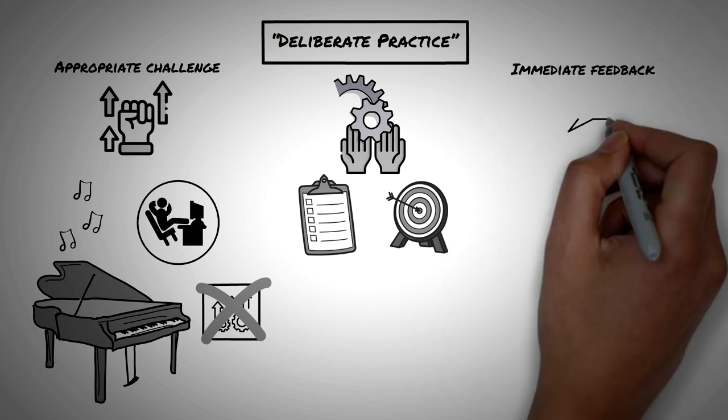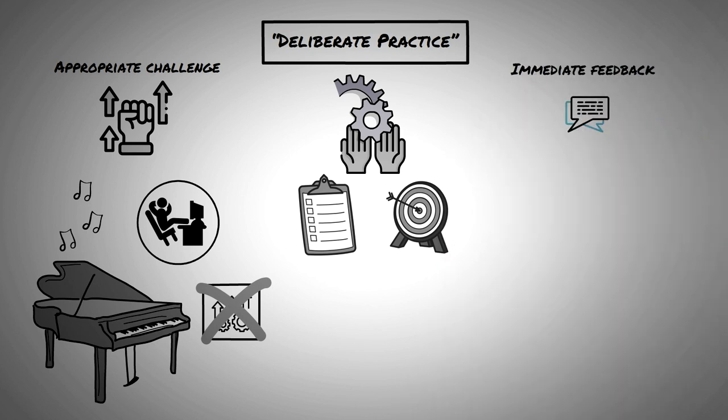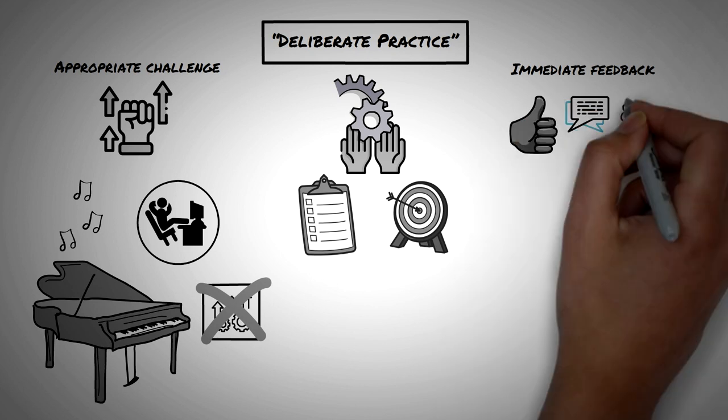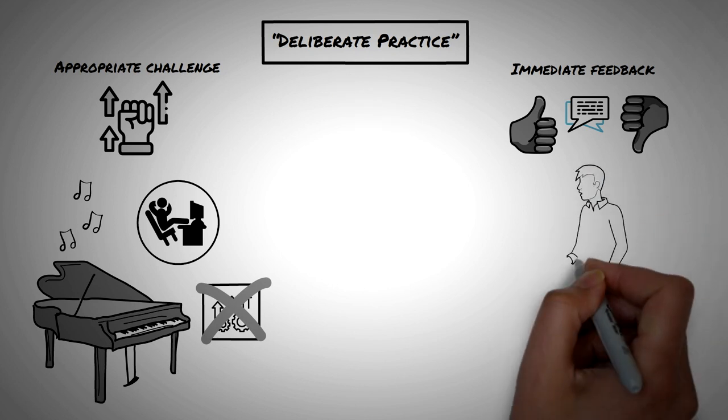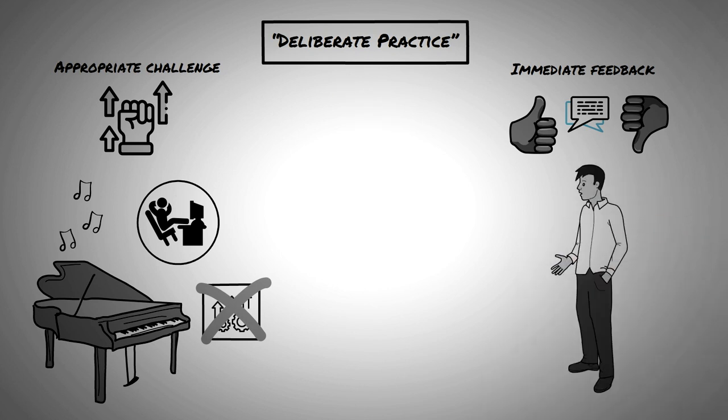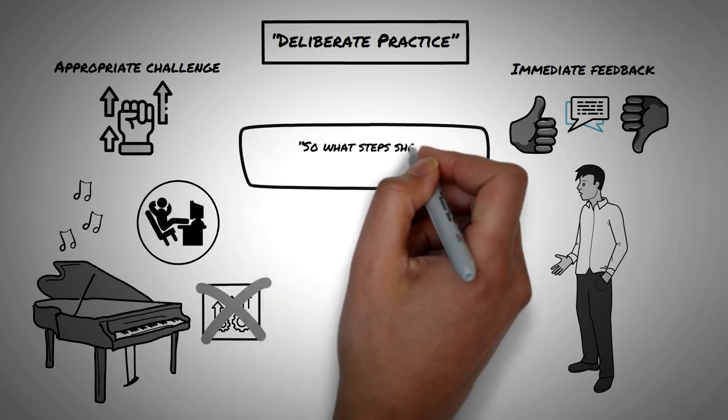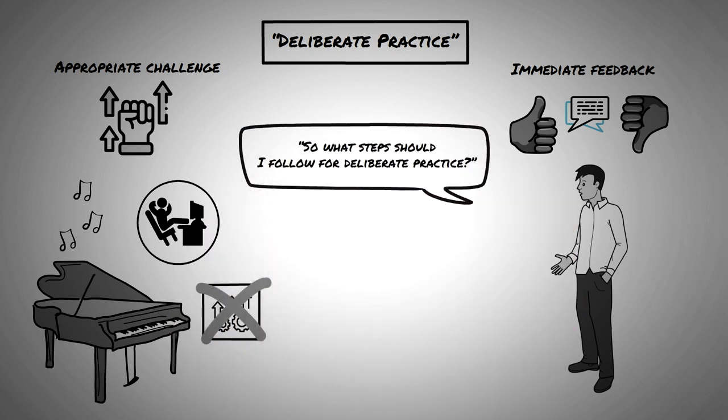Requirement number two, immediate feedback. You need someone to tell you what you're doing right or wrong, whether that's a manager, a teacher, a coach, or just somebody in your field. To someone like Mike, who's on a quest to find something he loves, a question like, so what steps should I follow for deliberate practice might come up.